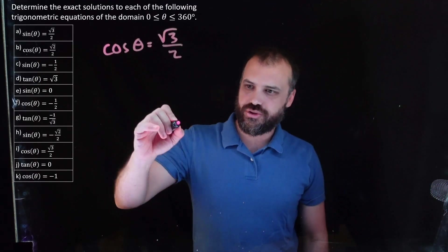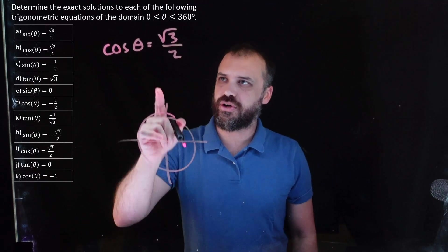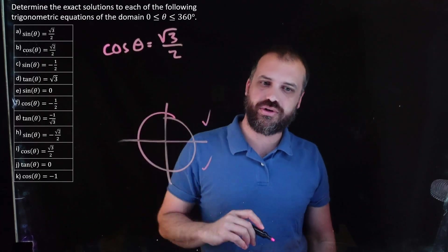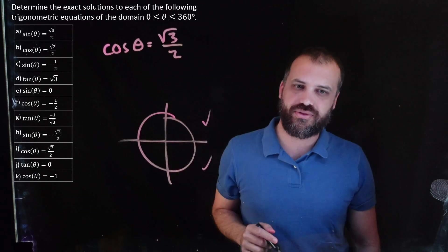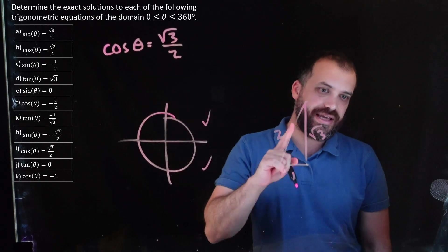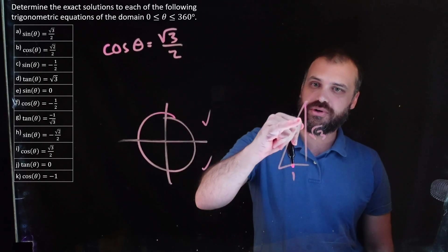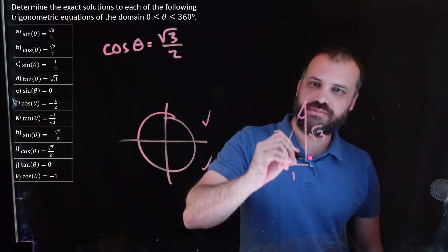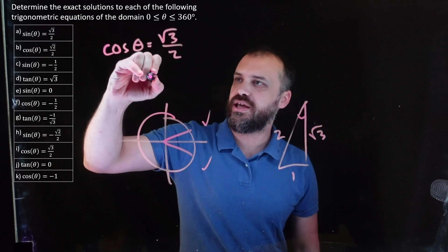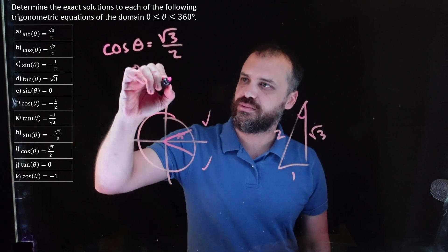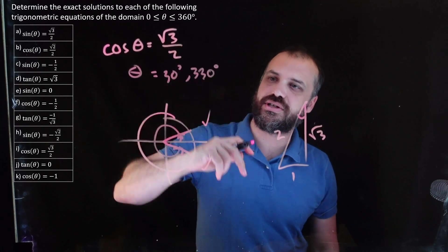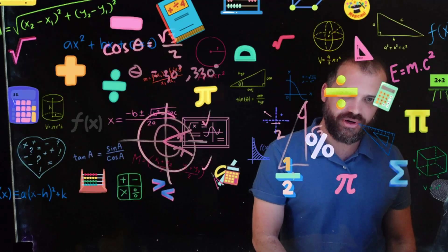Cos θ = √3/2. Draw a circle. Cosine is the x-coordinate and it's positive, so quadrant one and quadrant four. Root 3 on 2 comes from the 1-2-root-3 triangle. Cos is adjacent over hypotenuse, so it must be the 30-degree angle. Drawing 30 degrees in quadrant one and quadrant four. Theta equals 30 degrees or 330 degrees.